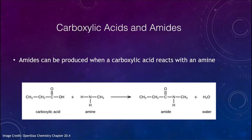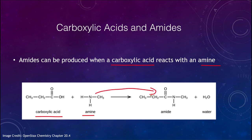We can also look at where this comes up with the carboxylic acids. Amides can be produced when one of those carboxylic acids reacts with an amine. So we take the acid and combine it with one of our amines, which has that nitrogen. That will then bond and make the amide. We've replaced one of those carbon-oxygen bonds with the nitrogen, and water comes away as a byproduct. So we can make an amide through reactions with carboxylic acids.